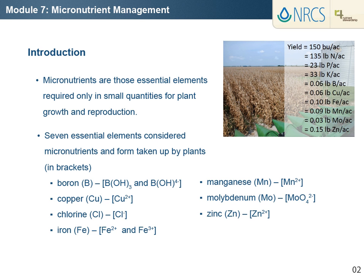To better understand the relative amounts needed by plants, we can look at the crop removal rate. For example, harvest of a 150 bushels per acre corn grain crop will remove approximately 135 pounds of nitrogen, 23 pounds of phosphorus, and 33 pounds of potassium per acre. In comparison to these macronutrients, the removal amounts for the micronutrients boron, copper, iron, manganese, molybdenum, and zinc are only 0.06, 0.06, 0.06, 0.1, 0.09, 0.03, and 0.15 pounds per acre respectively.